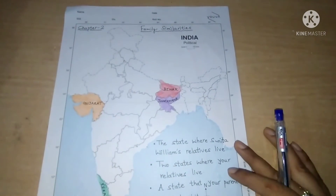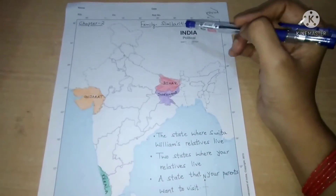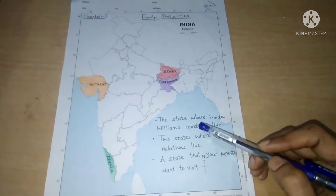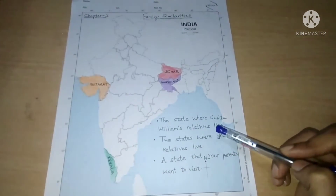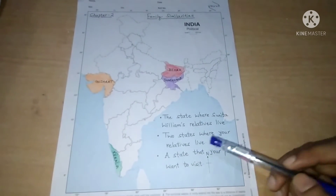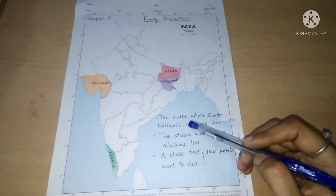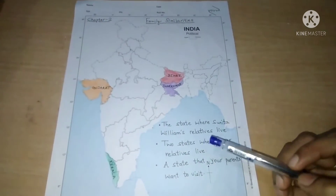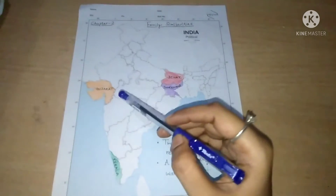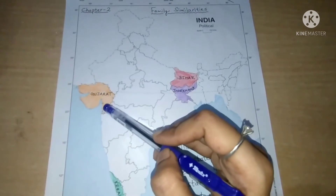Now the map work of chapter number 2, that is 'Family Similarities.' You will write 'Chapter 2 — Family Similarities' at the top. Your first question is: the state where Sunita Williams' relatives live. We have read in the chapter that Sunita Williams' relatives live in Gujarat. So we will color the state where I have filled orange color — this is Gujarat. You will write Gujarat here and then fill color in it.